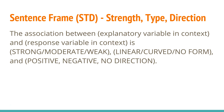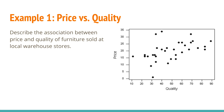The type is either going to be linear, curved, or have no form at all — it depends on what it looks like. And then if it is linear, you're going to say whether it's positive or negative for the direction. So strength, type, and direction — just remember it as your statistics STD. Let's take a look at a couple of examples. My first one is price and quality.